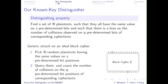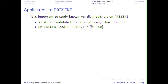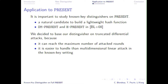If you have a distinguisher of this form, it's quite easy to launch — it translates quite directly. You just pick values fulfilling the input property, count how many output values fulfill the output condition, and depending on how many you got, you decide on a threshold and say whether you think you have PRESENT or something random. This strategy is applied to PRESENT and is still relevant to instantiations of compression functions using PRESENT. The distinguisher uses the truncated differential version of the multi-dimensional linear attack, because in the secret key setting it's one of the most powerful attacks, and the truncated differential expression is easier to handle.